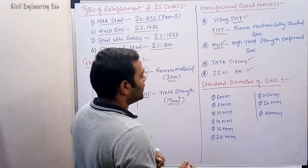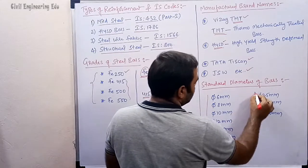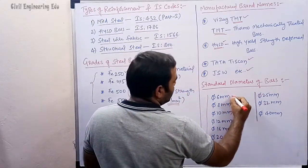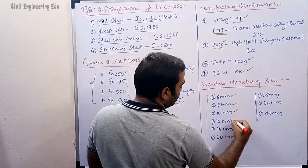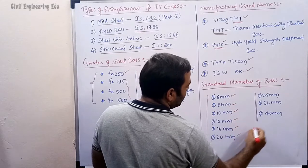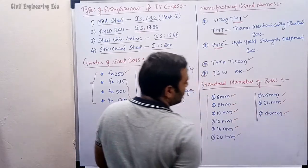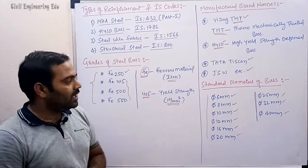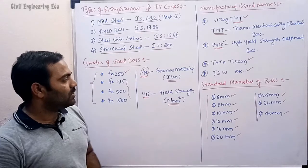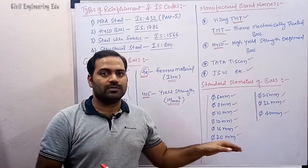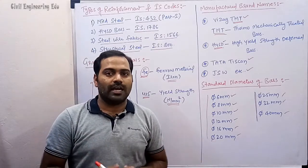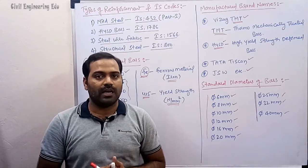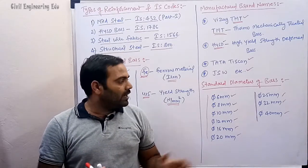The standard diameters of bars used in construction are: 6 mm, 8 mm, 10 mm, 12 mm, 16 mm, 20 mm, 25 mm, 32 mm, and 40 mm. Additionally, diameters of 36 mm, 45 mm, and 50 mm can also be availed by ordering from manufacturing companies.